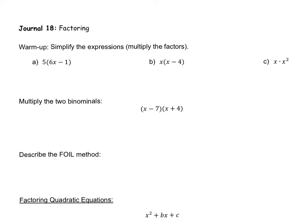Let's start with a warm-up problem where we're simplifying expressions by multiplying factors. We have a factor of 5 and a factor of (6x minus 1). Since the 5 is outside the parentheses, we can distribute the 5 inside. So we get 30x, and 5 times negative 1 is negative 5. These two are not like terms — one has x and one is a constant — so we can't combine any further.